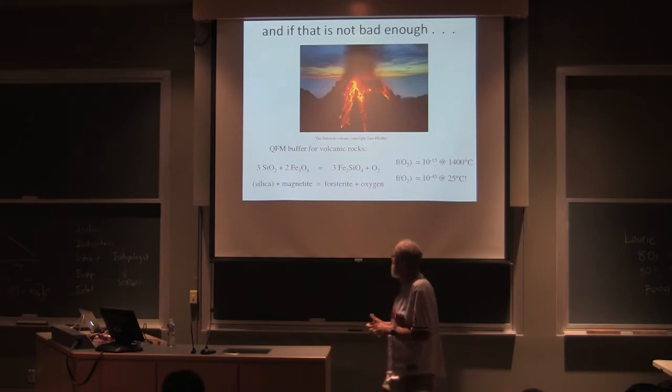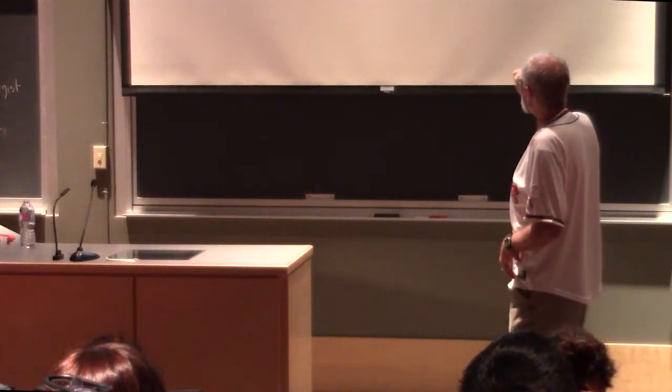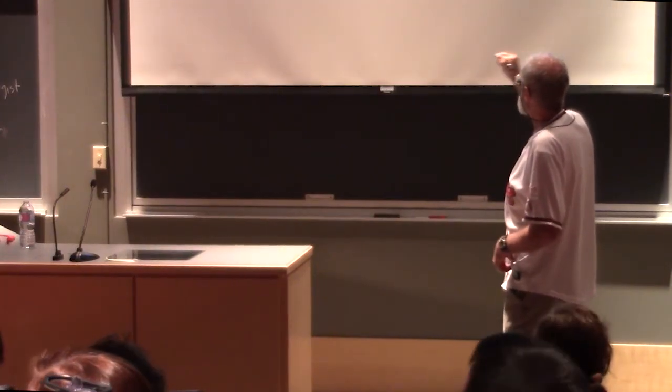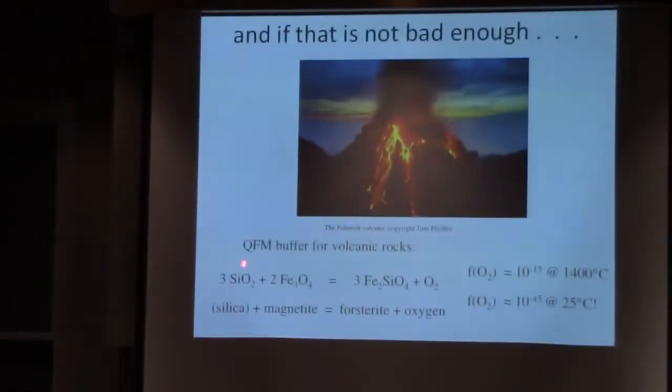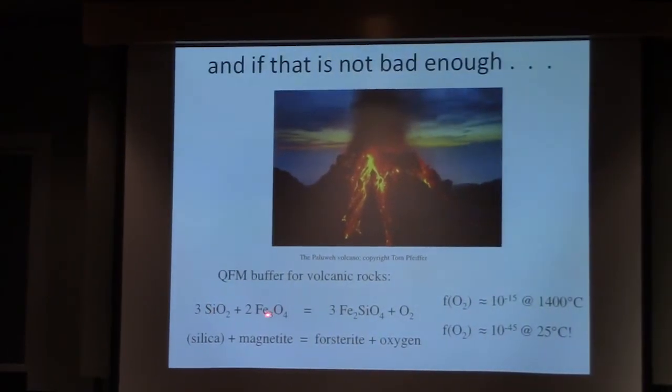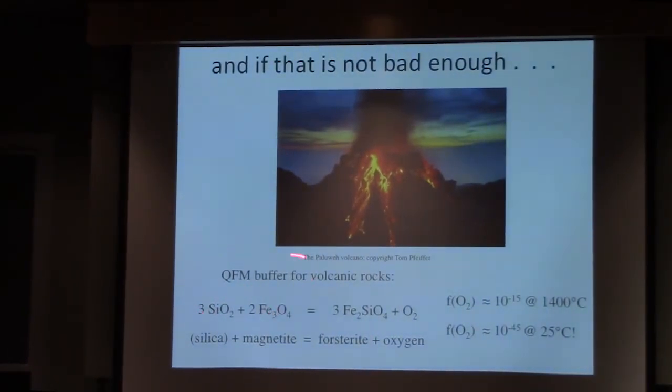If we actually look at volcanoes, volcanoes have this chemical reaction we call the QFM buffer: quartz, fayalite, magnetite. So this is all reduced iron, this is partly reduced, partly oxidized iron. So this is an oxidation of this volcanic mineral: silica, magnetite, fayalite, fayalite, oxygen.